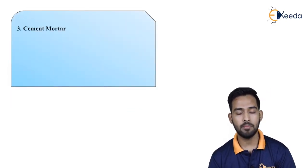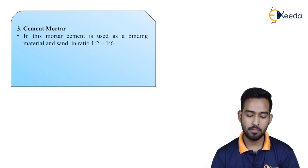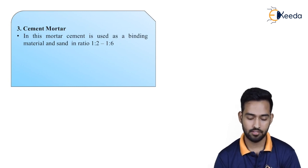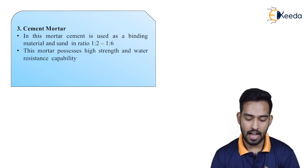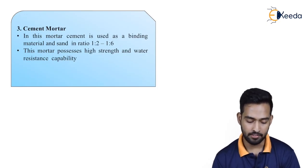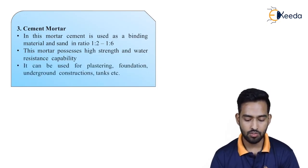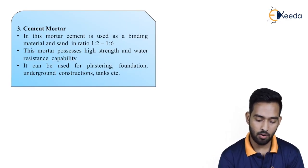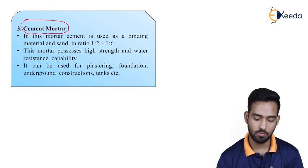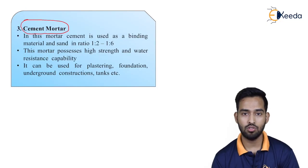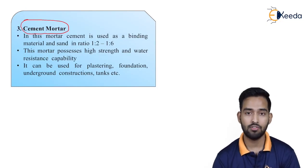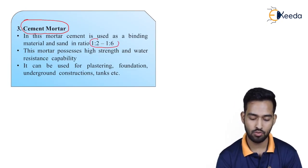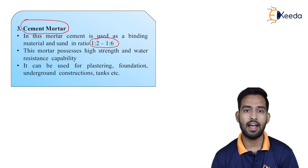Next is cement mortar. In this mortar, cement is used as a binding material and sand in a ratio of 1:2 to 1:6. This mortar possesses high strength and water resistance capability. It can be used for plastering, foundations, underground structures, and tanks. Cement mortar is generally useful for all types of water-borne structures.